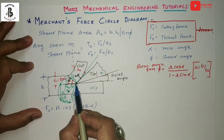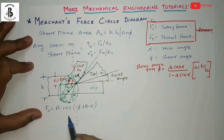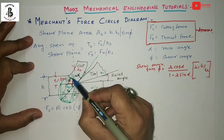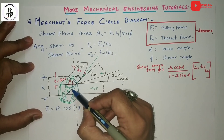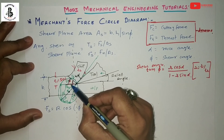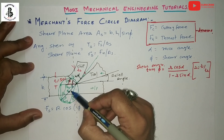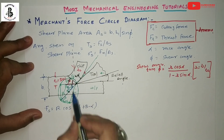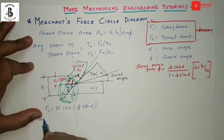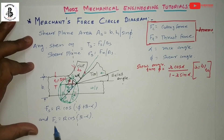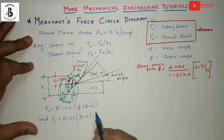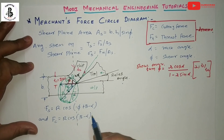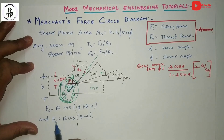From the Merchant force circle, the shear force Fs equals the resultant R multiplied by cos(φ + β − α). Here phi is the shear angle, beta minus alpha is the angle between Fc and the resultant. So Fs = R cos(φ + β − α). Also, Fc = R cos(β − α). This establishes the relationship between shear force and cutting force.